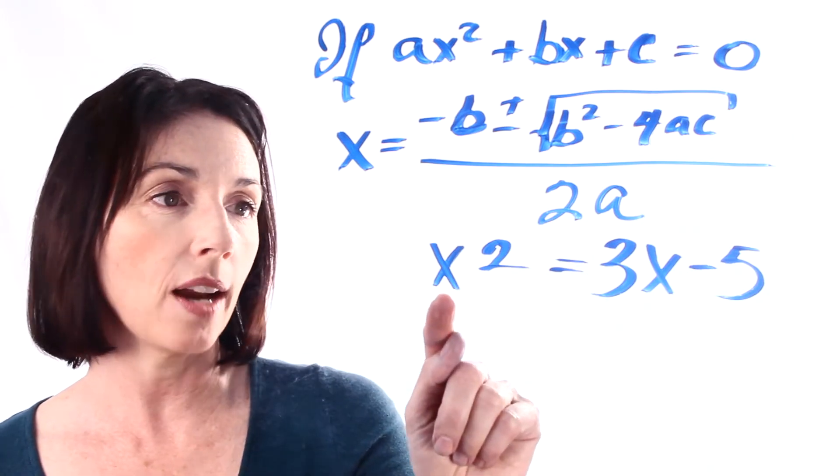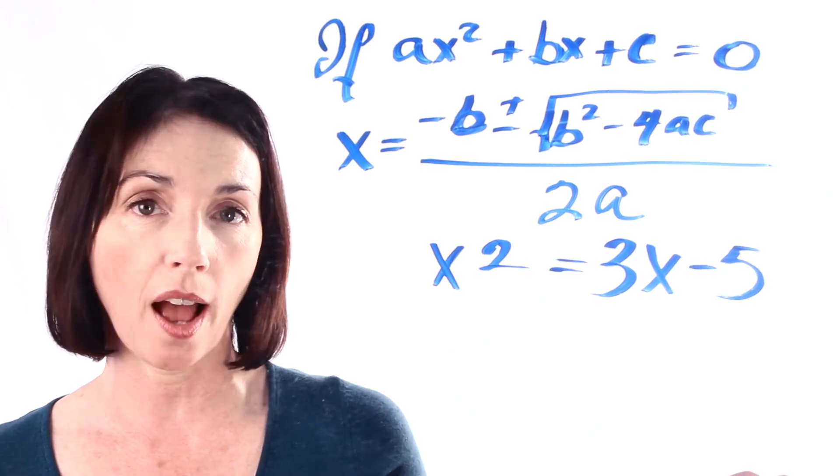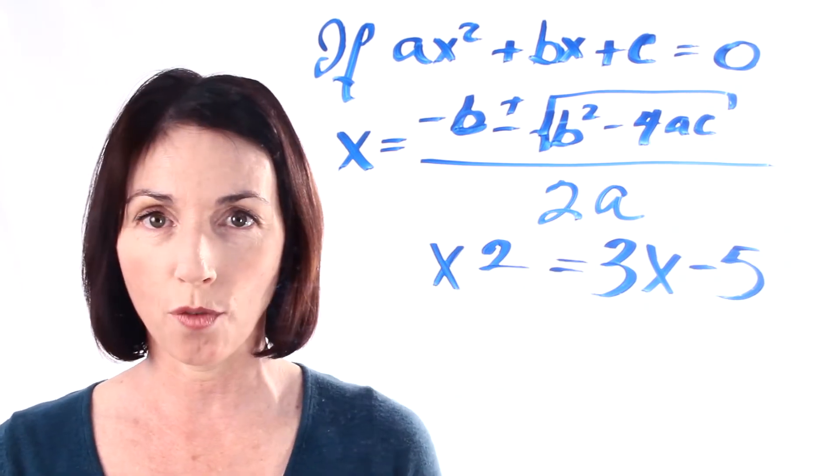We have this equation right here, x squared equals 3x minus 5. So is that in the right form to use the quadratic formula?